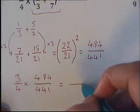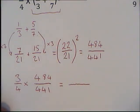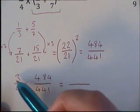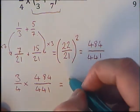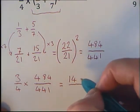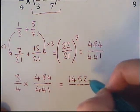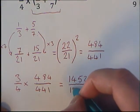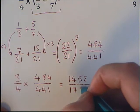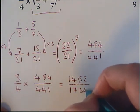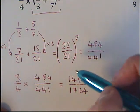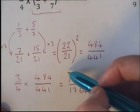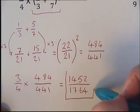3 times 484 is 1,452, and then 4 times 441 is 1,764. We're not going to simplify down, we're just going to leave it like that because we've got some pretty big numbers there.